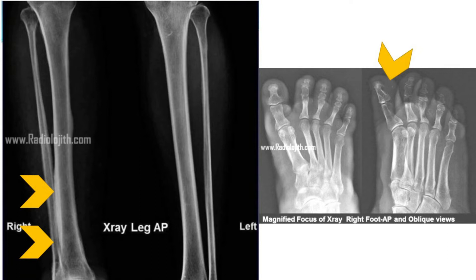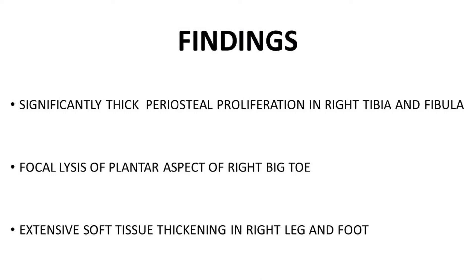In the magnified view, the right foot reveals well-defined focal lysis of the plantar aspect of the big toe and of the medial aspect of the second metatarsal bone near the tarsal aspect. In addition, extensive soft tissue thickening is present in the right leg and foot, and the joints appear well preserved.